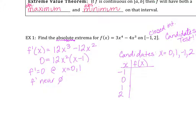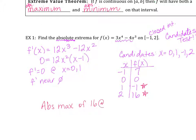If I plug in negative one into f(x), that's going to be 3 − (−4) + 3, so that's 7. Zero is easy — that's 0. One gives negative one. At x = 2: 3 times 2 to the fourth is 16, 48 minus 4 times 8 is 32, so that's 16. I can see that F has an absolute max of 16 at x = 2, and F has an absolute min of negative one at x = 1. And that's the candidates test for absolute extrema.